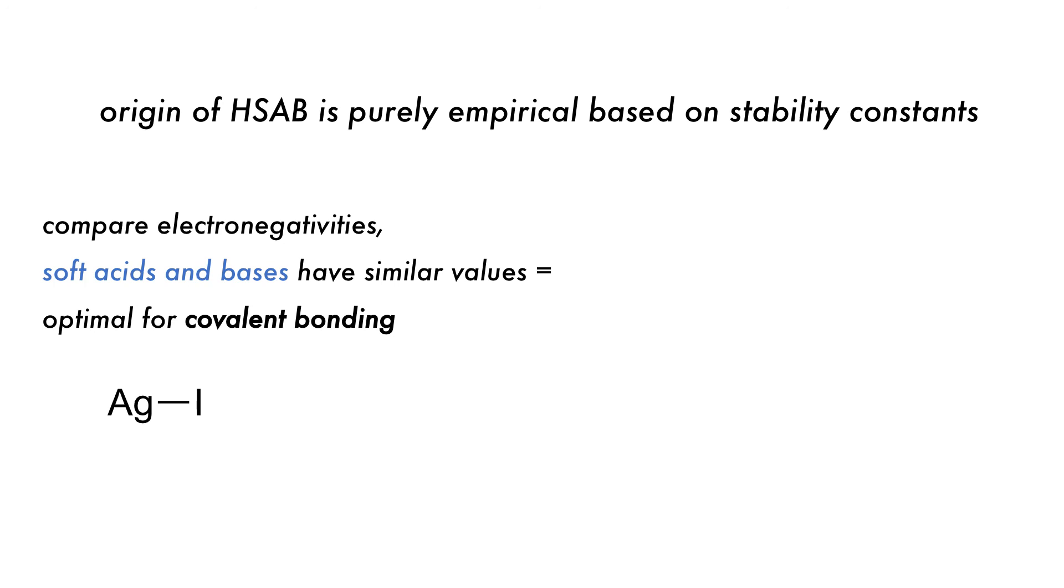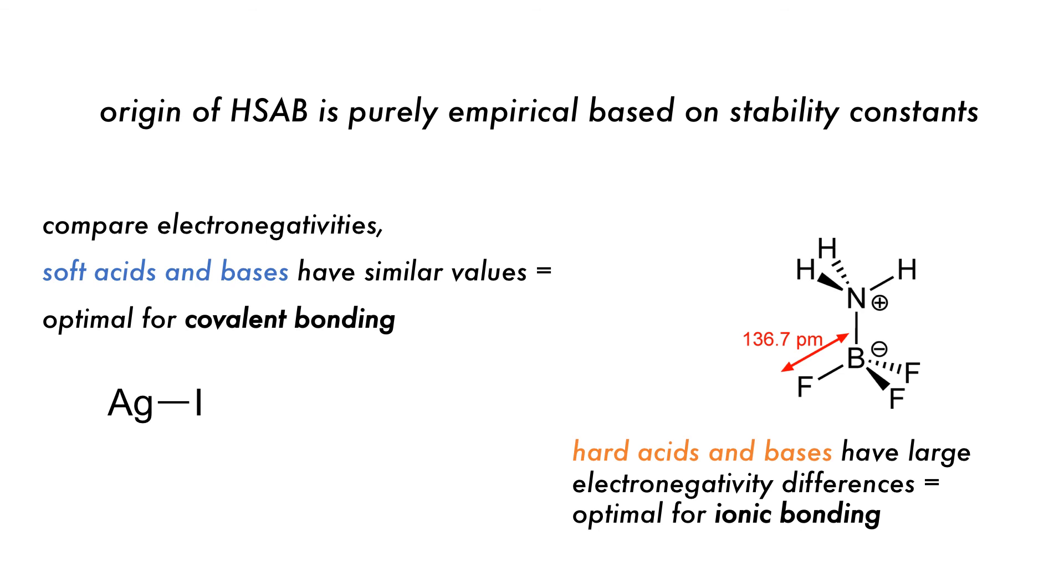The origin of hard, soft, acid-base theory was purely empirical, based on observations of stability constants. It can, however, be explained if we consider electronegativities. Soft acids and soft bases have similar values. This is optimal for strong covalent bonding. Conversely, hard acids and hard bases have a large difference in their electronegativities that is optimal for ionic bonding.